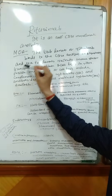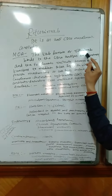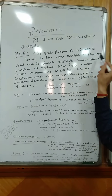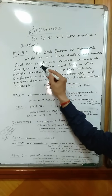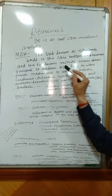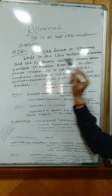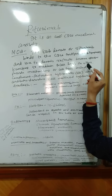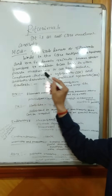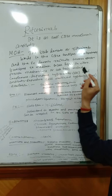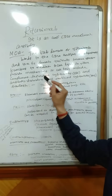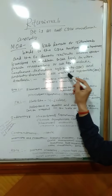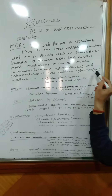Coming to the mechanism of action, the Fab domain of Rituximab binds to the CD20 antigen on B lymphocytes and the Fc domain recruits immune effector functions to mediate B cell lysis in vitro. Possible mechanisms of cell lysis include complement-dependent cytotoxicity (CDC) and antibody-dependent cell-mediated cytotoxicity (ADCC).